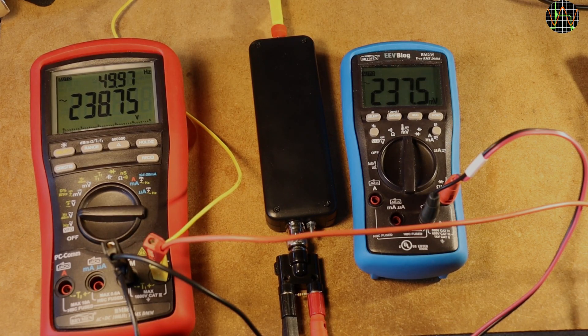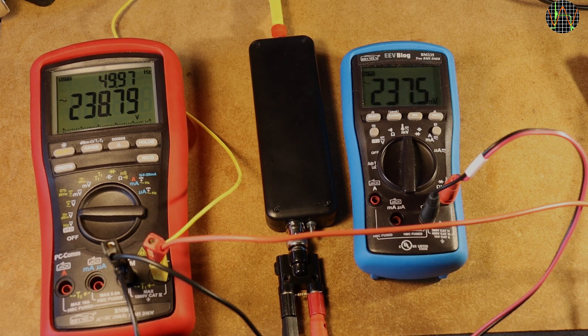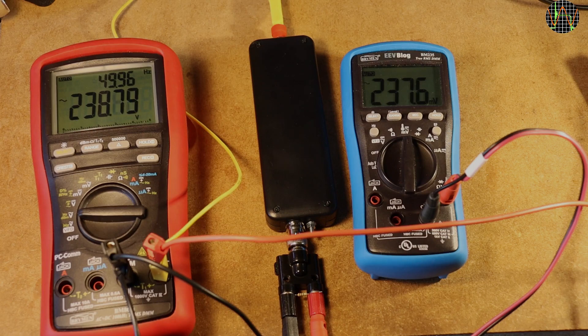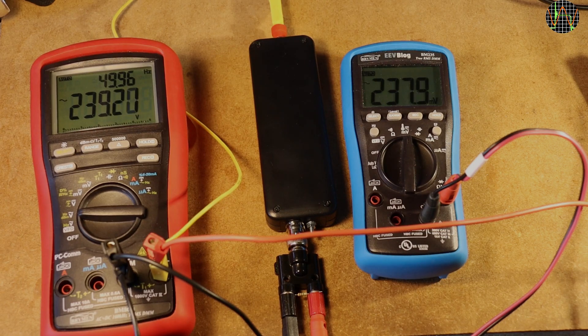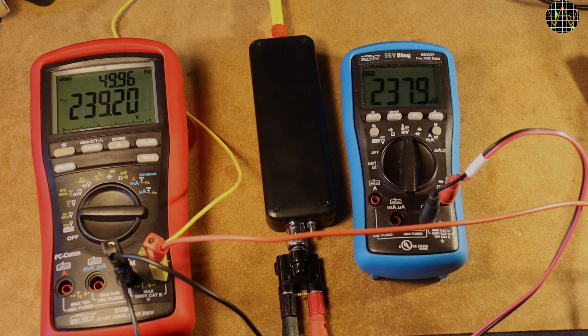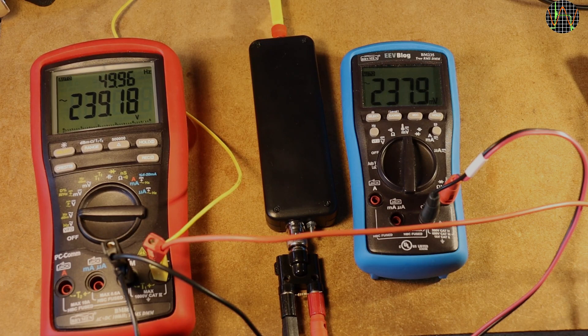Since the DC test showed that the probe is functioning correctly, it is safe to use mains for a simple AC test. As you can see, 238V AC produce 237.5 or so mV AC on the other side, correct to within half a percent. This was of course at mains frequency which happens to be not quite 50Hz today.